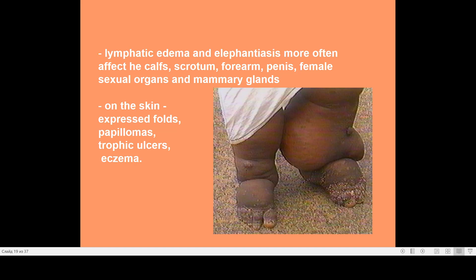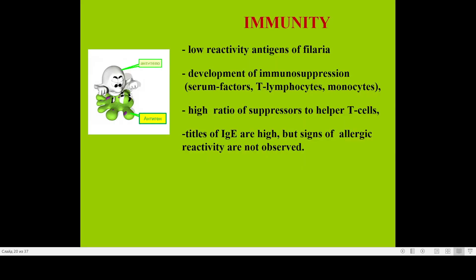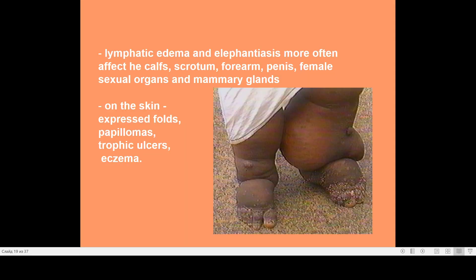Without adequate treatment, lymphedema and elephantiasis more often affect the scrotum, genitals, and mammary glands. On the skin there is a expressed appearance of papillomas, trophic ulcers, and chronic dermatitis. This is the final stage of lymphatic filariasis.